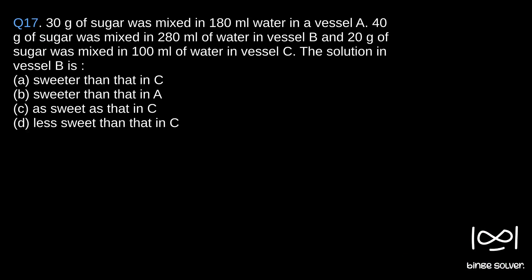Next question, Question 17: 30 grams of sugar was mixed in 180 ml water in vessel A, 40 grams of sugar was mixed in 280 ml of water in vessel B, and 20 grams of sugar was mixed in 100 ml of water in vessel C. The question asks about the solution in vessel B.